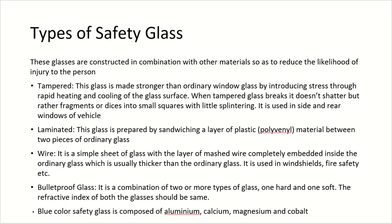Wire type of glass: in an ordinary glass, when meshed wire is embedded, it is known as wire safety glass, and is used in windshields and fire safety applications. Bulletproof glass is made up of two or more types of glass — one hard, one soft — and the refractive index of both glasses should be the same so that we can see through them. Blue colored safety glass is composed of aluminum, calcium, magnesium and cobalt.